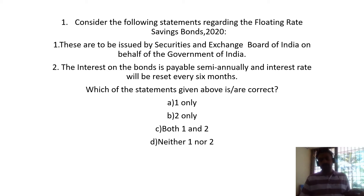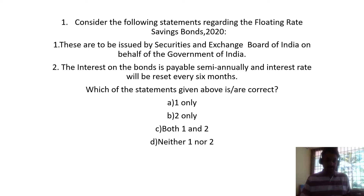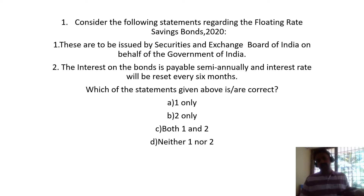The options are: 1 only, 2 only, both 1 and 2, or neither 1 nor 2. The right answer here is B - the second one only. Statement 1, which says these are to be issued by the Securities and Exchange Board of India on behalf of the Government of India, is incorrect.